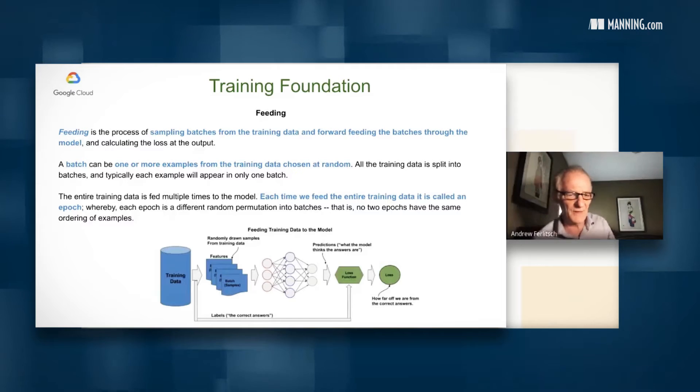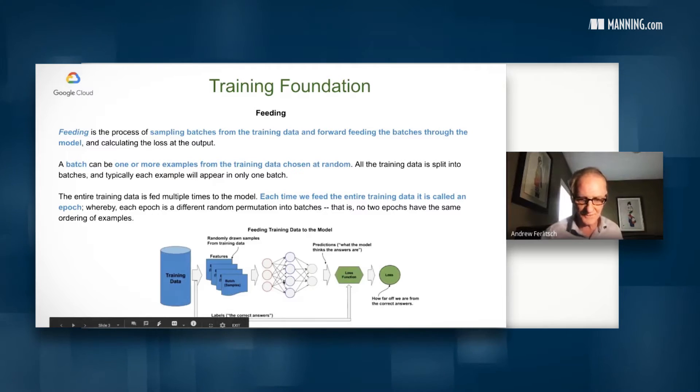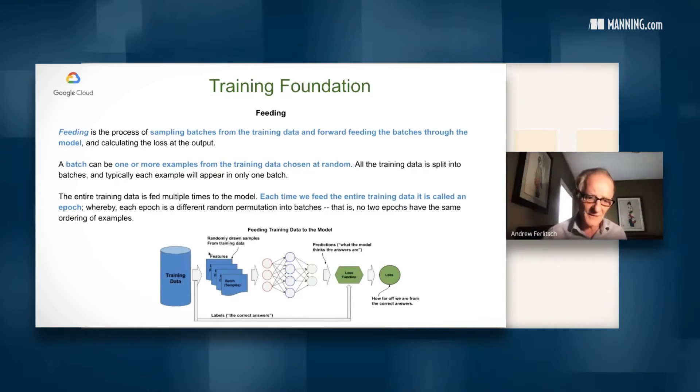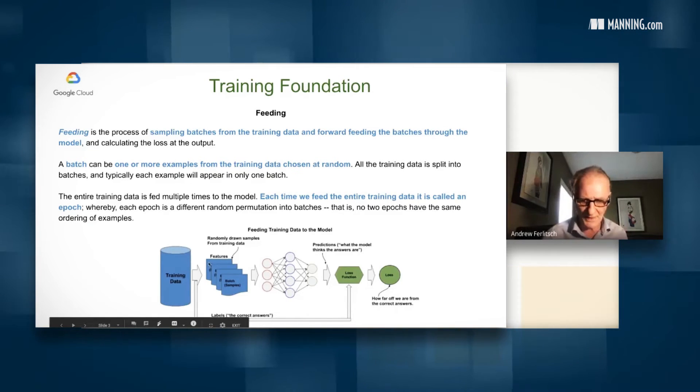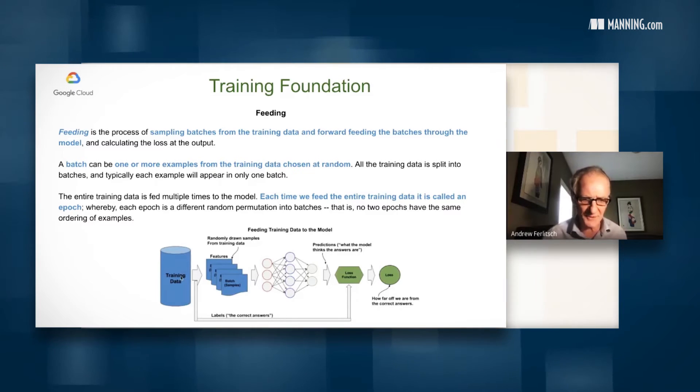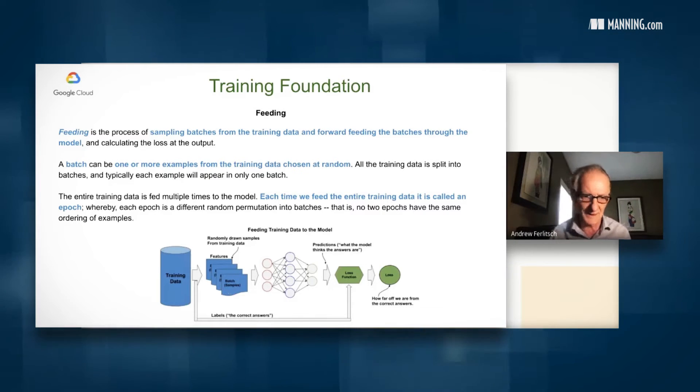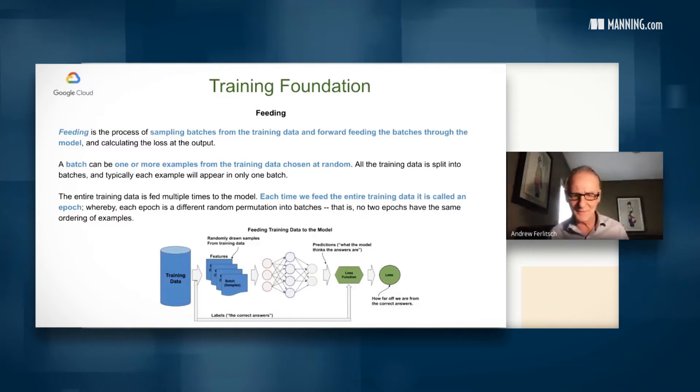So let's talk a little bit about feeding. So we've talked about we have this training data here, and we're going to feed it through the model. And what we do is we break it up into batches, and we're going to feed a batch at a time through the model. And every time a batch goes through, we're going to calculate the loss. Now these batches are actually formed in random, but no example in here appears in more than one batch. Or in other words, every example here appears only in one batch, but what's in a batch is randomly drawn from the training data. And then what we're going to do is once we fed all the training data through it, that's called an epoch, and we're going to keep repeating this a number of times.